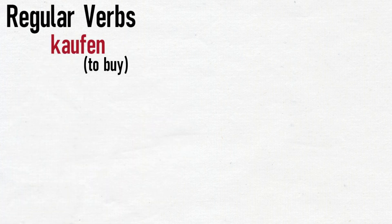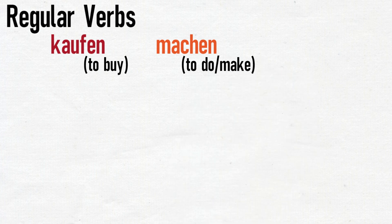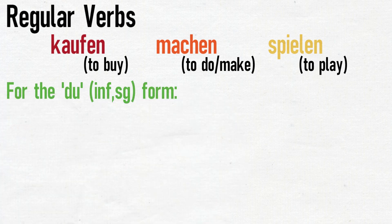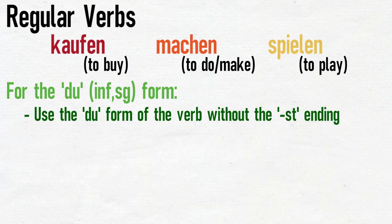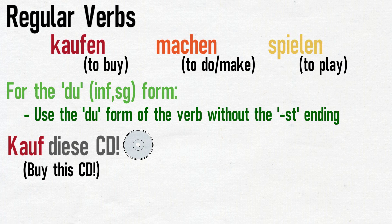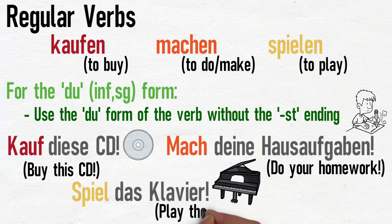Let's look at these three examples: kaufen (to buy), machen (to do or make), spielen (to play). When talking to one person with whom you have an informal relationship, you simply use the du form of the verb but without the standard -st ending. For example: Kauf diese CD — Buy this CD. Mach deine Hausaufgaben — Do your homework. Spiel das Klavier — Play the piano.